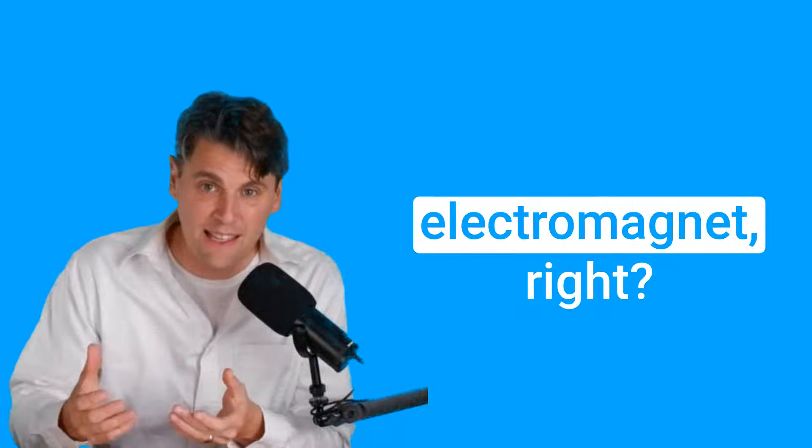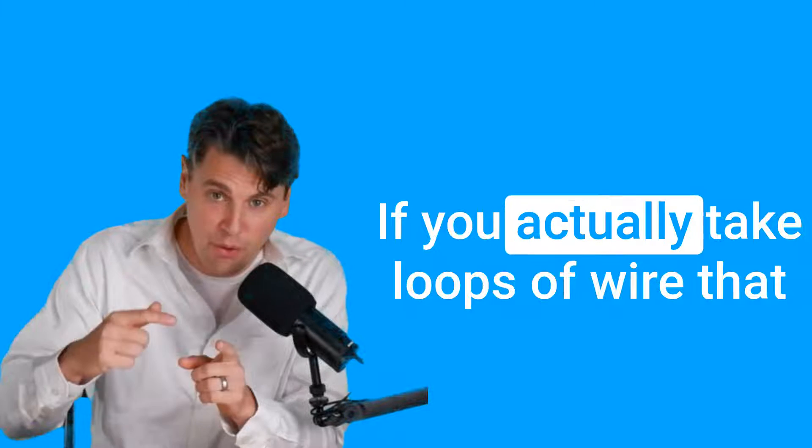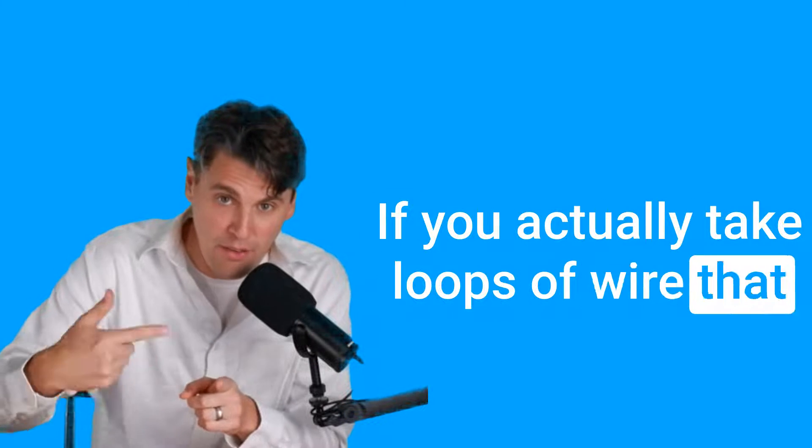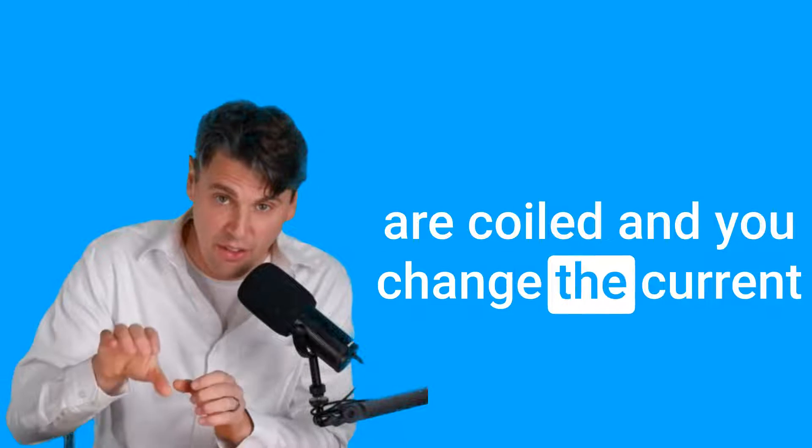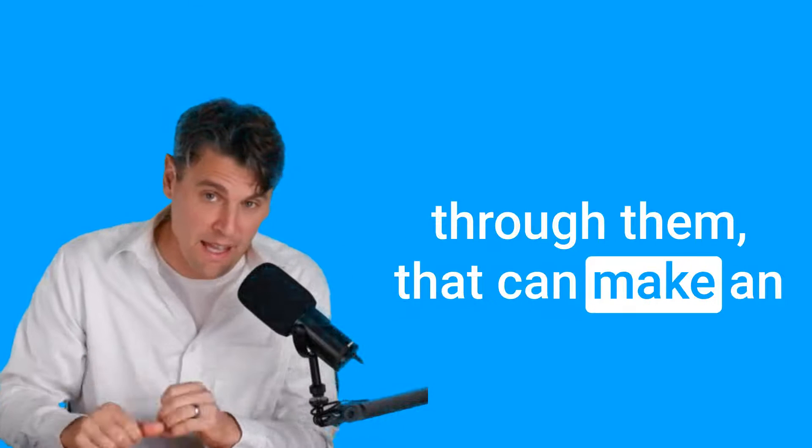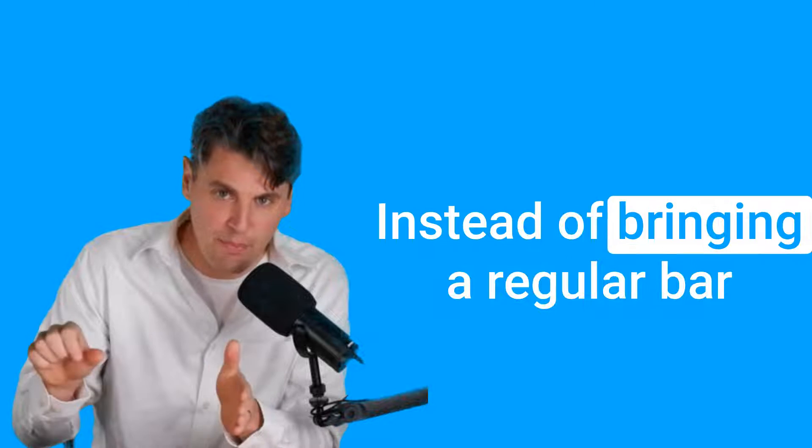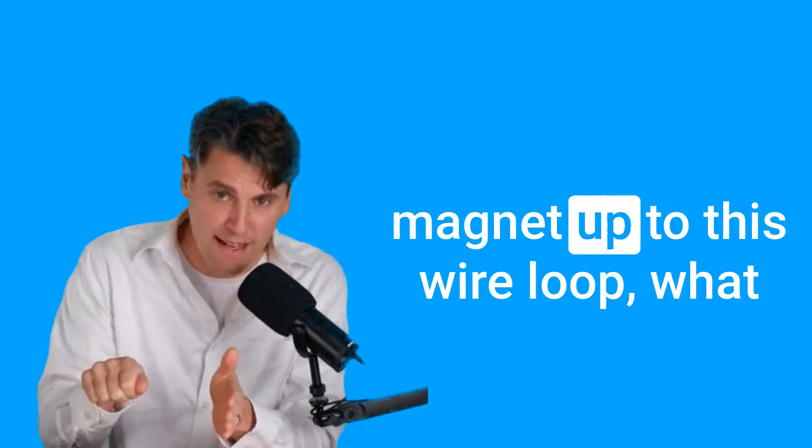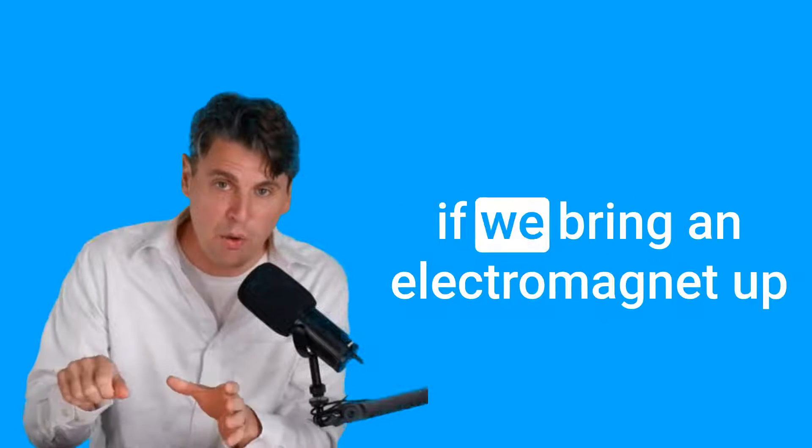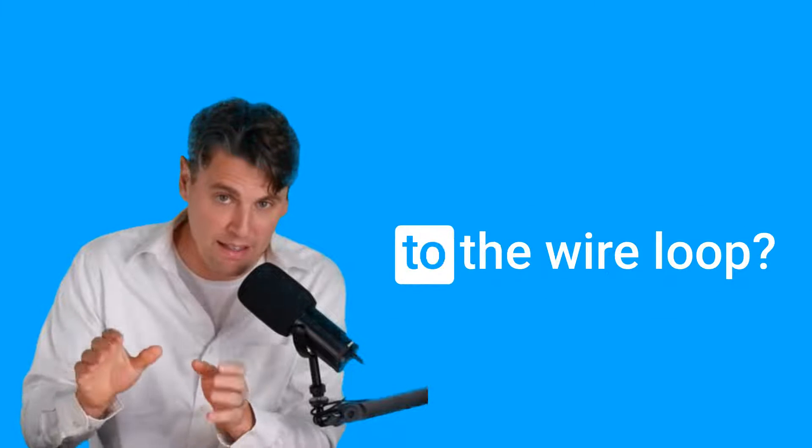That's how you make an electromagnet, right? If you actually take loops of wire that are coiled and you change the current through them, that can make an electromagnet. Instead of bringing a regular bar magnet up to this wire loop, what if we bring an electromagnet up to the wire loop?